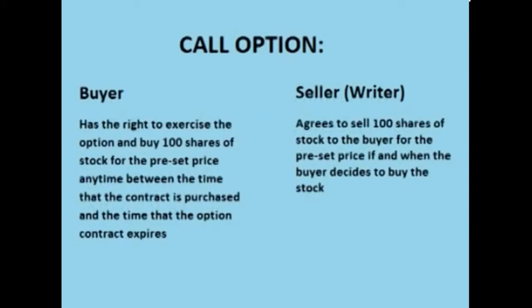An option is a contract between two people, a buyer and a seller. A seller is also called a writer because the seller is technically writing a contract and selling it to the buyer. When someone buys a call option, they are buying a contract from the contract writer, also called the seller. The contract states that the option buyer is entitled to buy 100 shares of a particular stock for a preset price. The contract also states that the option seller agrees to sell the option buyer that stock at that preset price.